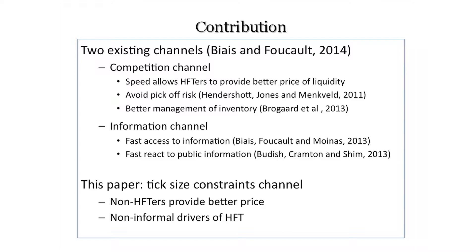The second channel is the information channel, with two important literatures. First, if you have a speed advantage, you as an informed trader can pick off the market maker. There's a paper by Biais, Foucault, and co-authors on this. There's also a paper by Eric Budish showing that you don't need to know information first — as long as you react to information first, even if you observe it simultaneously, you still generate adverse selection.